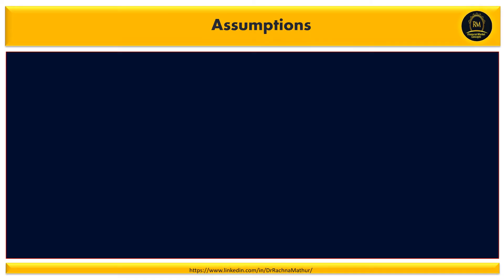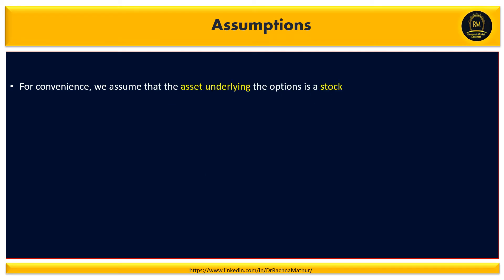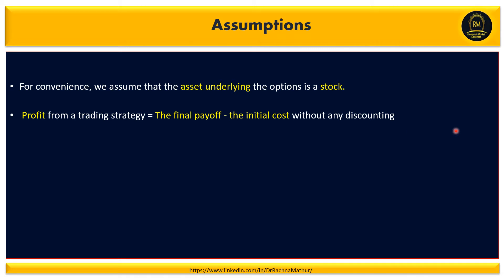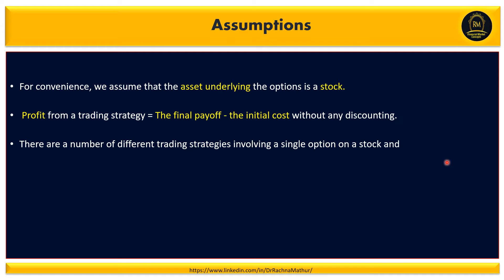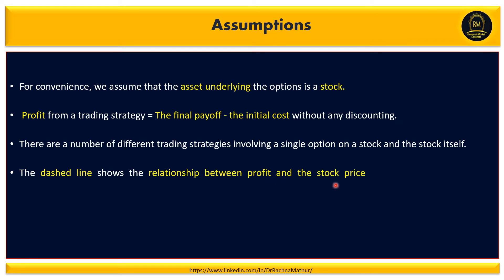To make a portfolio for all four profit patterns, we have to take into consideration certain assumptions. For convenience, we assume that the asset underlying the options is a stock. Profit from the trading strategy is calculated from the final payoff minus the initial cost without any discounting. There are a number of different trading strategies involving a single option on a stock and the stock itself. The dashed line shows the relationship between profit and the stock price for individual securities constituting the portfolio.